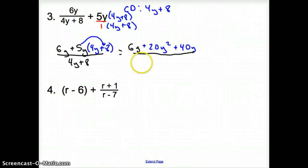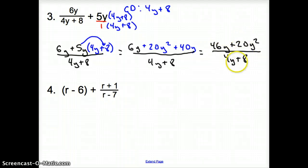And then plus 40y from here. That goes over what? This goes over 4y plus 8. So, now let's simplify. This top simplifies into 46y plus 20y squared over 4y plus 8. Now, I would completely accept this answer, but if we look closely, all these numbers are what kind of numbers? They are all even. All even numbers are divisible by 2. So, once again, ladies and gentlemen, I would accept what is on the screen right now.